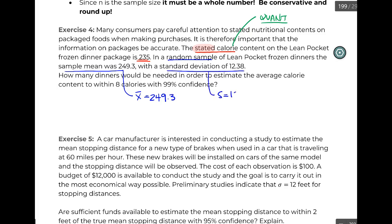With a standard deviation—it's in the same sentence as my word 'sample'—so this is an s of 12.38. Then we finally get the last piece: how many dinners would be needed to estimate the average content within 8 calories with 99% confidence?